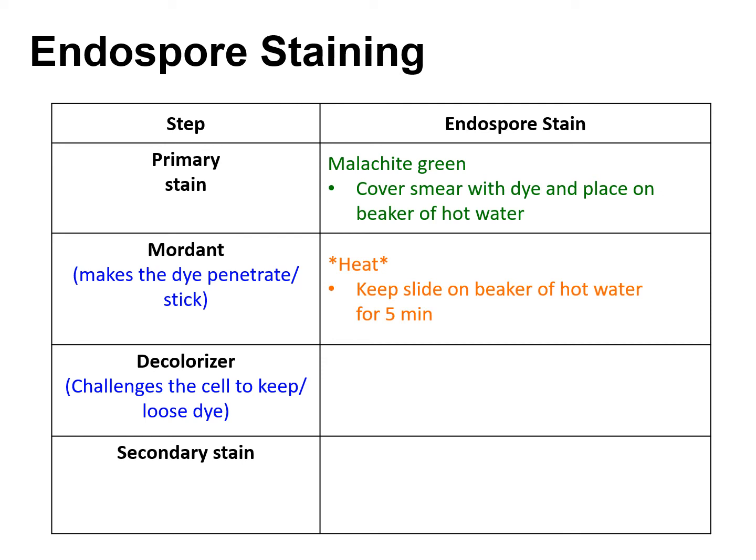The mordant is heat. We take the slide with malachite green and place it on a hot water beaker. The hot steam acts as the mordant, helping the malachite green penetrate deep into the cells and into the endospore. After leaving it on the hot water beaker for about five minutes, we decolorize by rinsing the slide with water. The water washes off the malachite green from the bacteria cell, but not from the endospore.